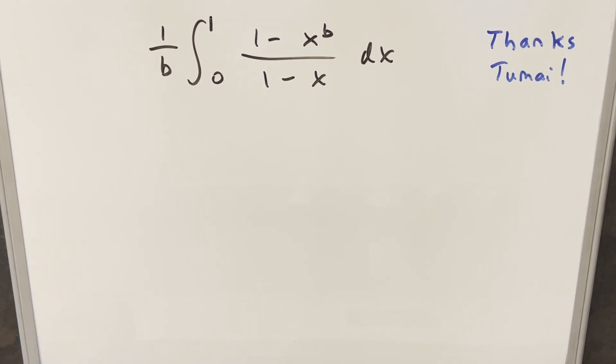Okay, we've got a nice integral. This one was sent to me by Tumai. We've got 1 over b times the integral from 0 to 1, 1 minus x to the b over 1 minus x dx.